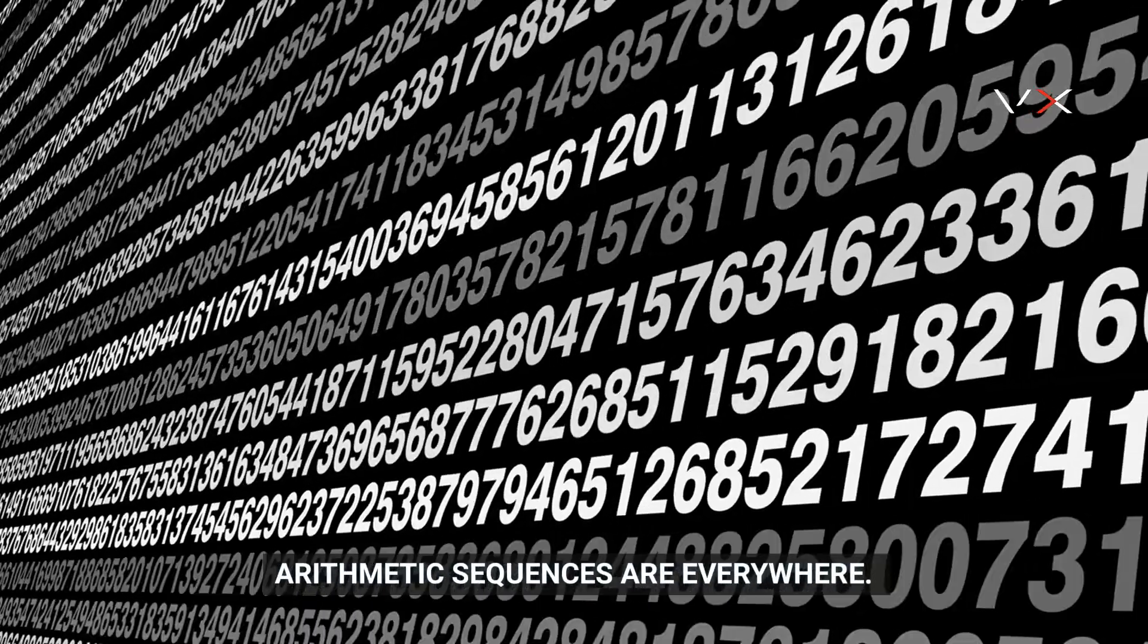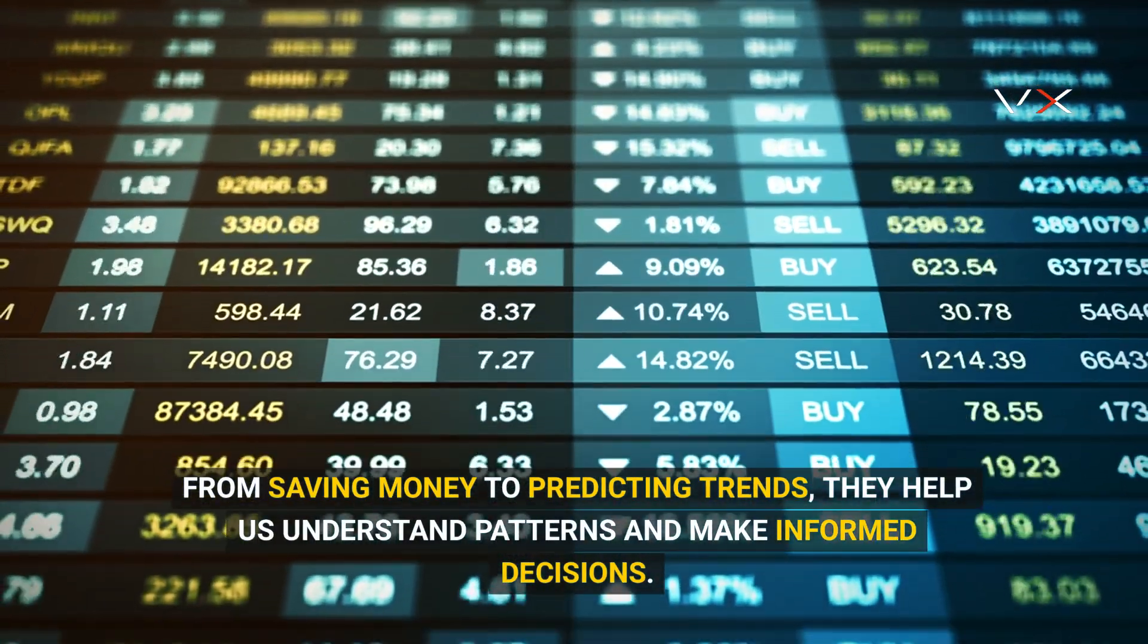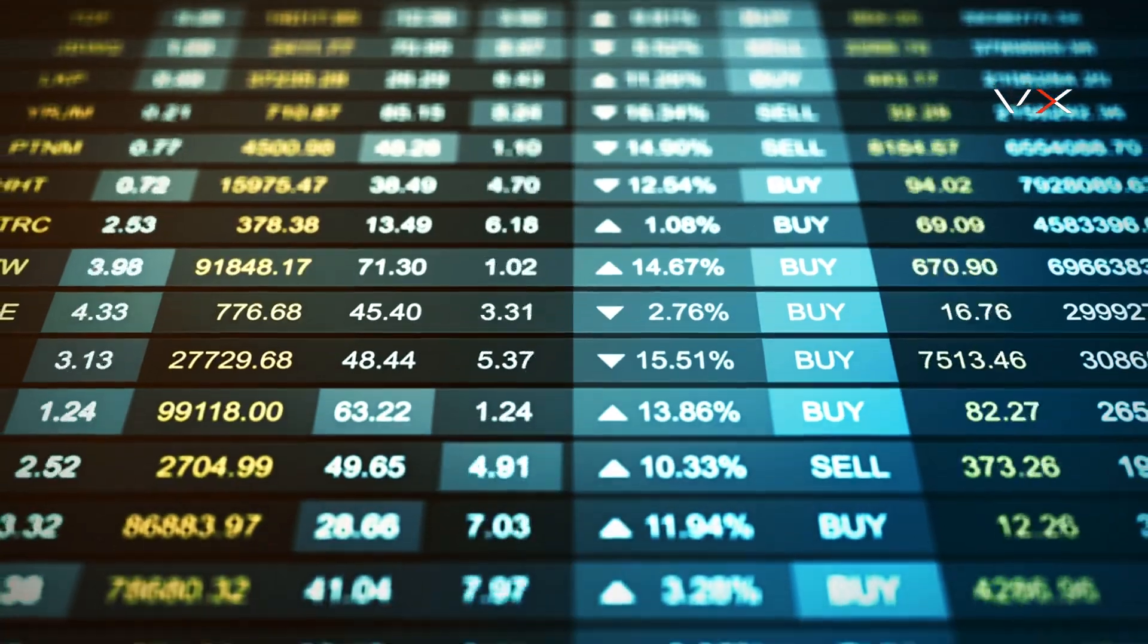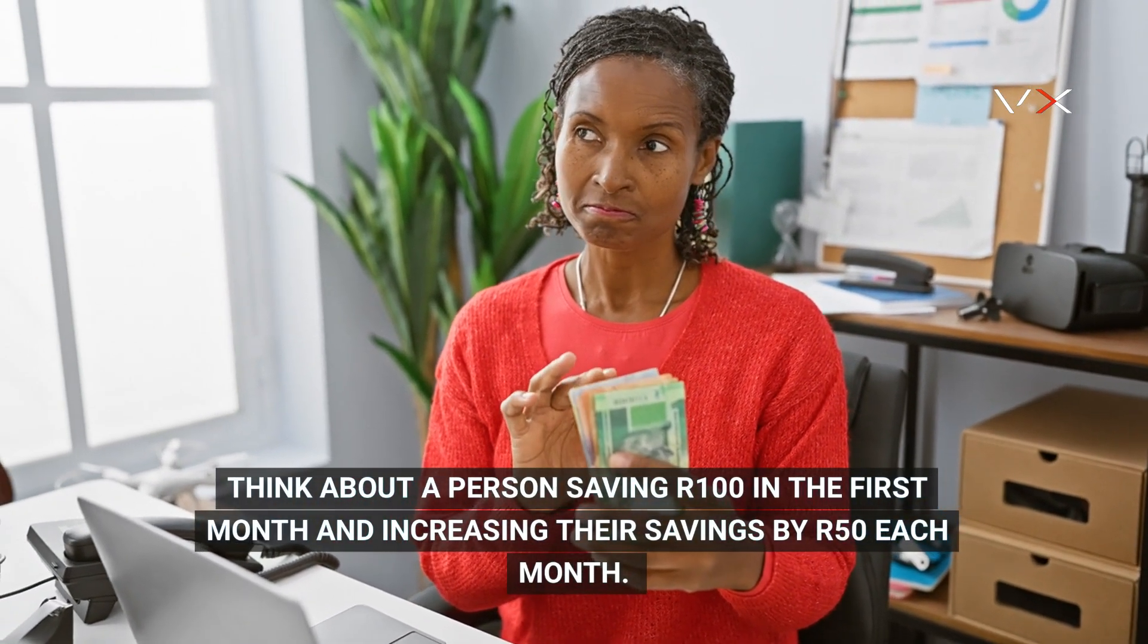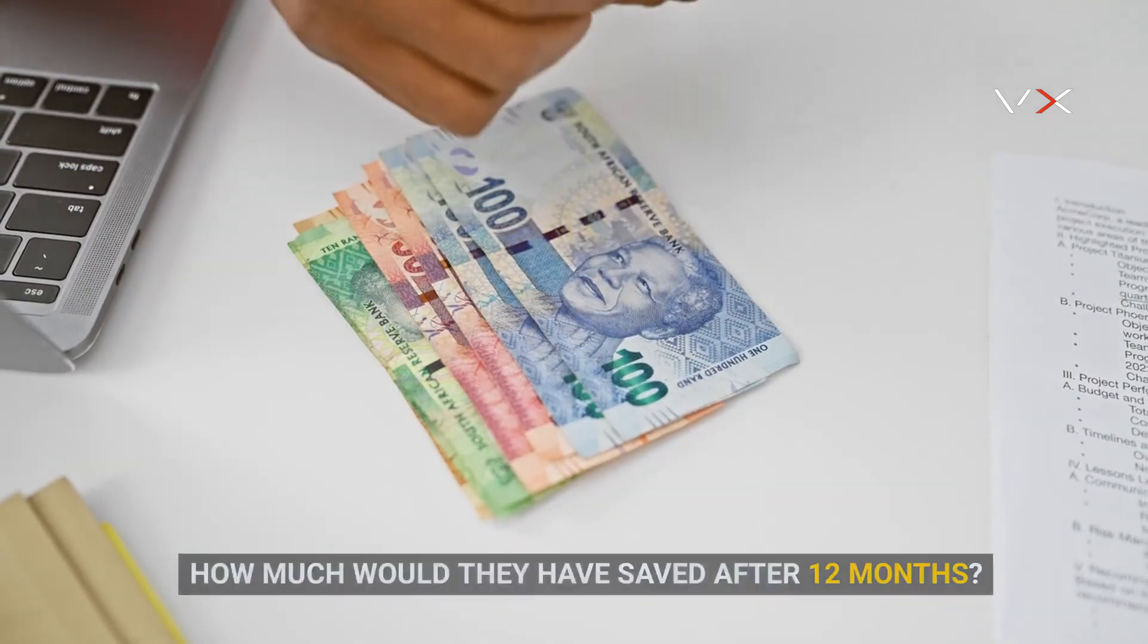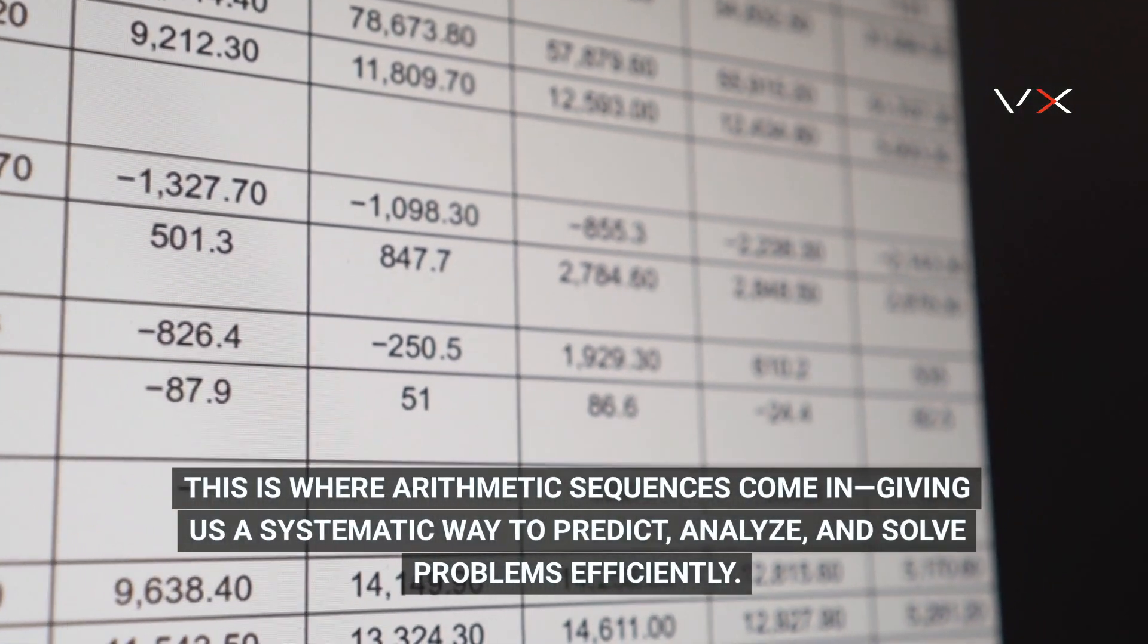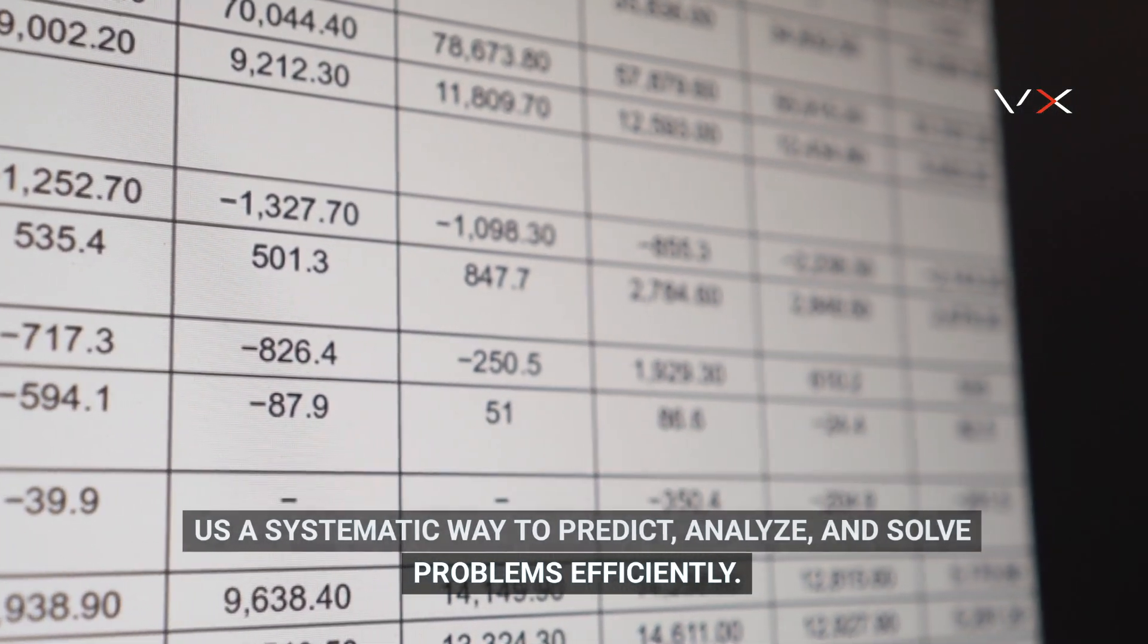Arithmetic sequences are everywhere. From saving money to predicting trends, they help us understand patterns and make informed decisions. Think about a person saving 100 Rand in the first month and increasing their savings by 50 Rand each month. How much would they have saved after 12 months? This is where arithmetic sequences come in, giving us a systematic way to predict, analyze, and solve problems efficiently.